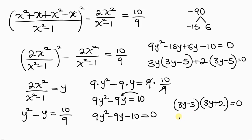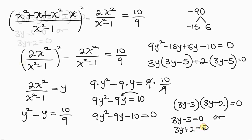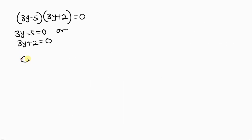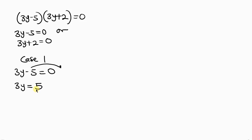We have two cases. Case 1: 3y - 5 = 0. Moving -5 to the right gives 3y = 5, and dividing both sides by 3 gives y = 5/3.